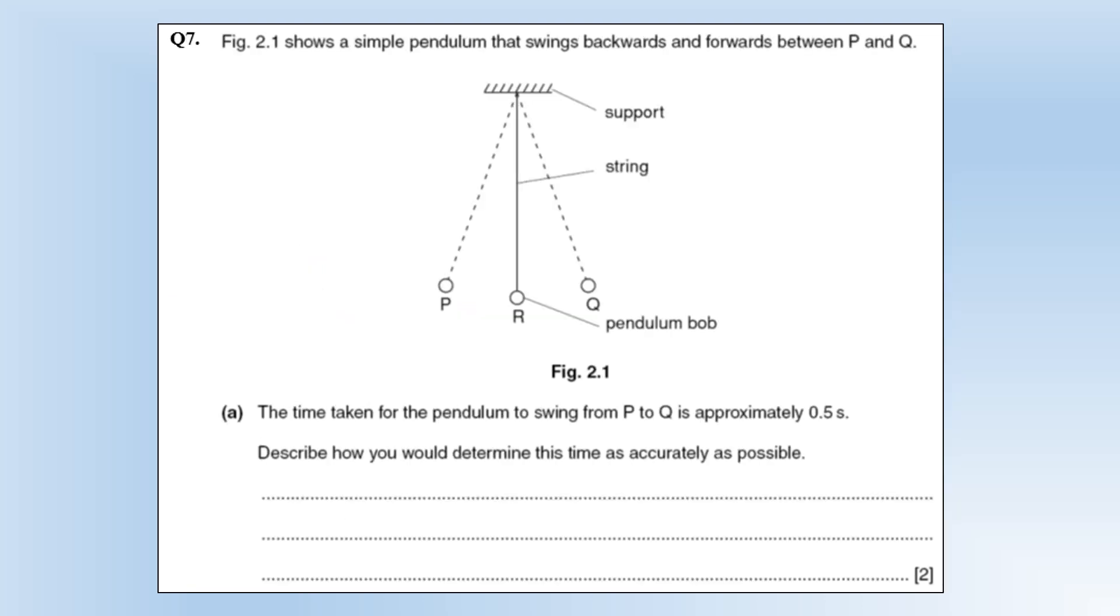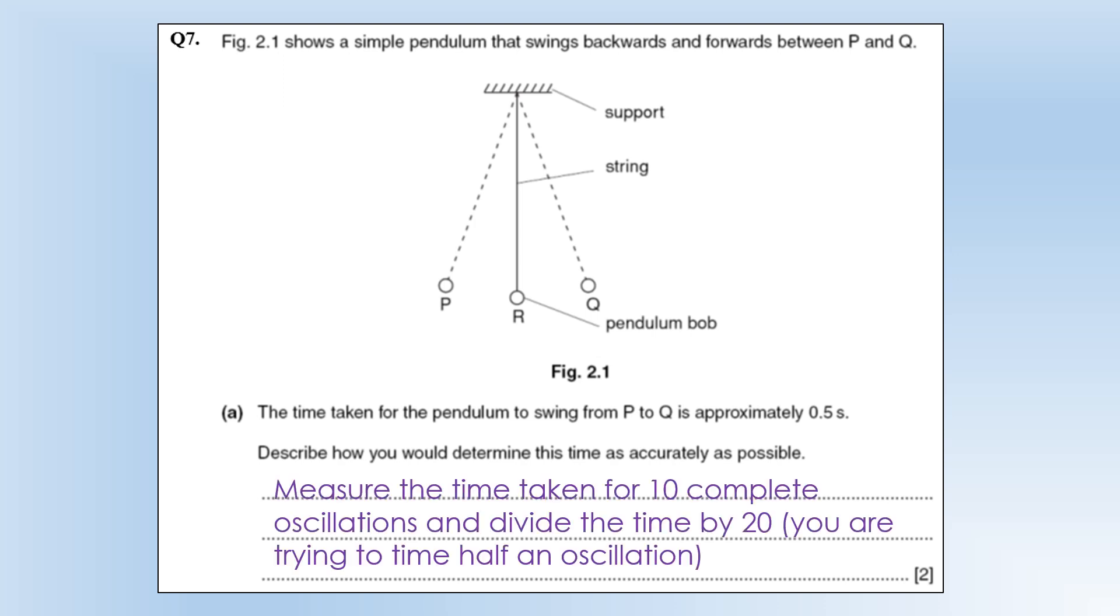Okay so we've got a diagram showing a simple pendulum that swings backwards and forwards between p and q. The time taken for the pendulum to swing from p to q is approximately 0.5 seconds. Describe how you determine this time as accurately as possible. So what I'm going to do is to measure the time taken for 10 complete oscillations. A complete oscillation would be going from p up to q and then back to p.